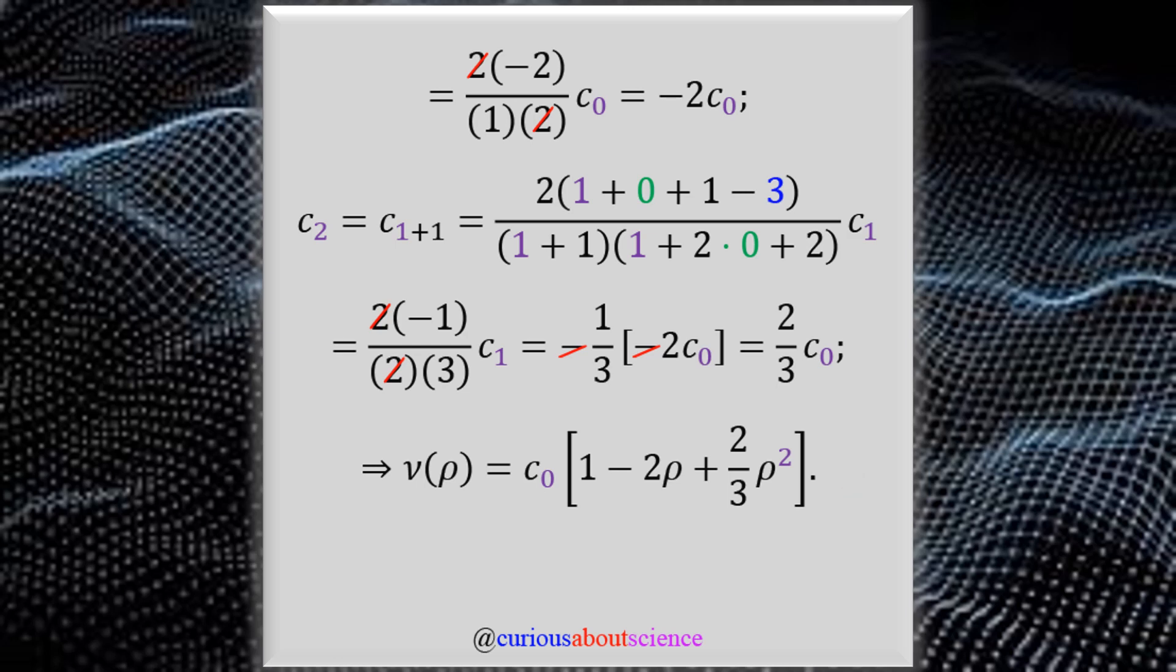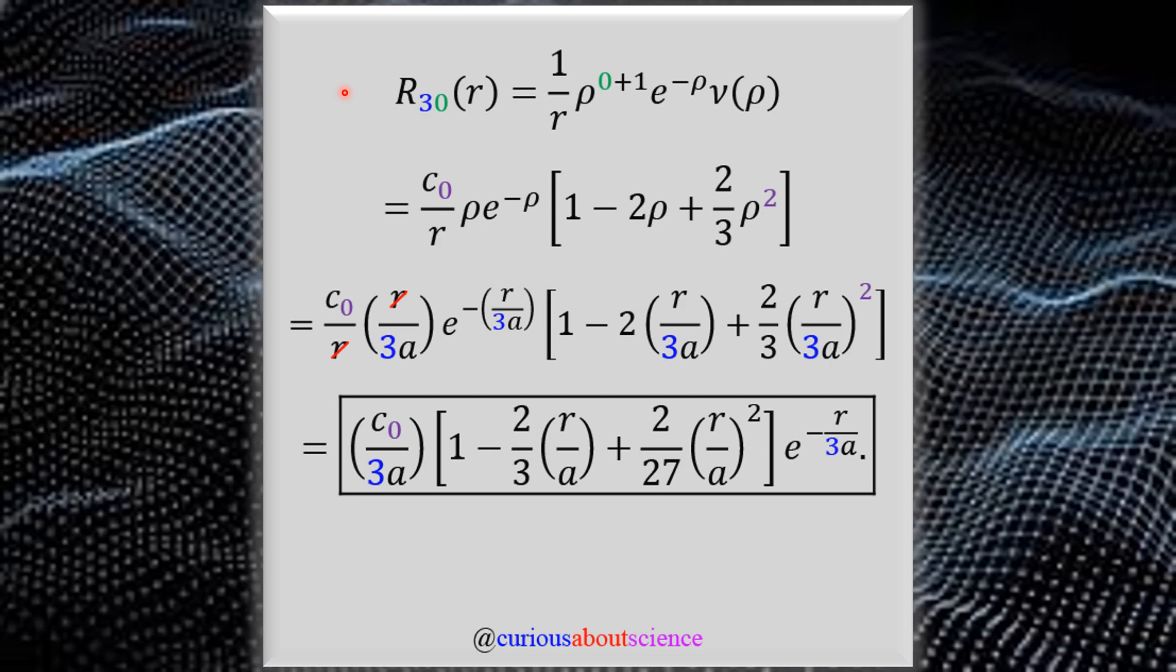All right. On to the configuration now and putting this all together. Finally, then what we could say is that the radial for three and zero is equal to one over r rho. So now that we have an l up here, that goes to zero for this case. So we have rho of zero plus one, the e to the negative rho and then the polynomial, which we just found. So let's go ahead and tidy this up. When we do so, rho goes to one. Our exponential stays put. We have a C_0 that we factored out from the v of rho polynomial. And this is everything that we just found in a previous step.